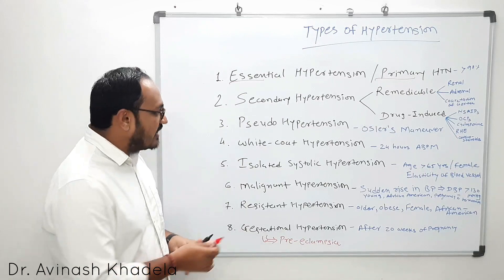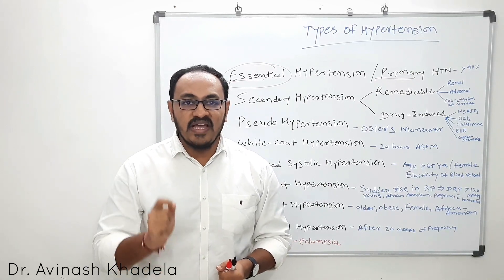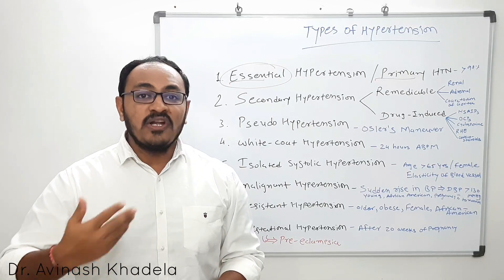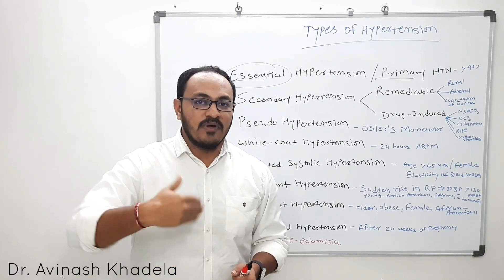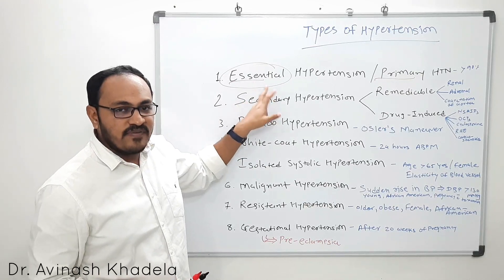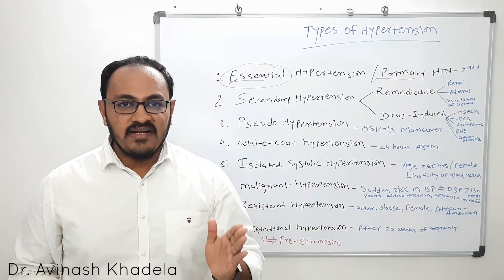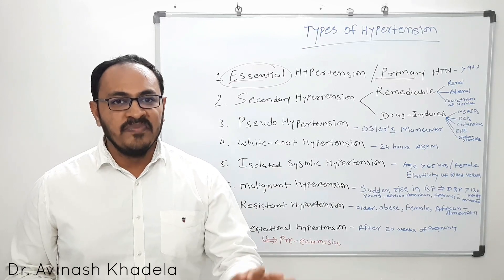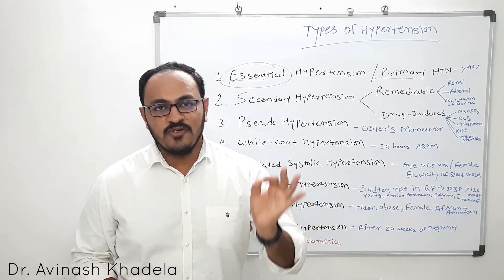The term 'essential' came from the misbelief that a certain elevation in blood pressure is required to perfuse the vital organs. However, continually increasing blood pressure to perfuse vital organs will ultimately harm them more than the benefit of perfusion. As per JNC7, 120/80 mmHg is required to perfuse all vital organs, and per JNC8, maintaining 140/90 mmHg in the blood vessels is sufficient to perfuse the vital organs.